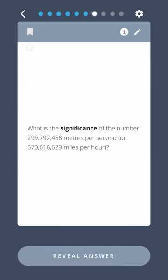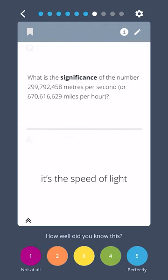What is the significance of the number 299,792,458 meters per second or 670,616,629 miles per hour? It's the speed of light.